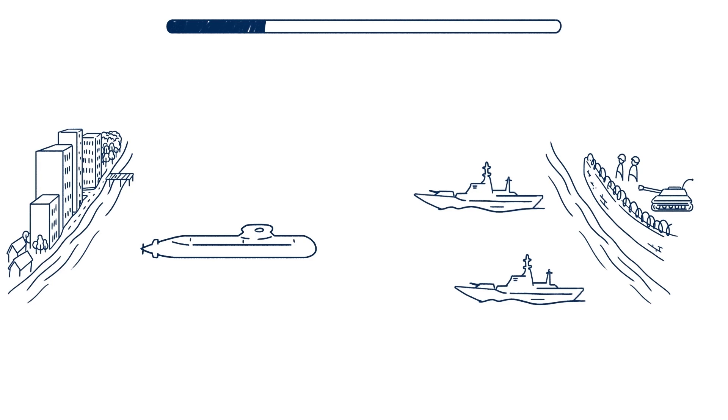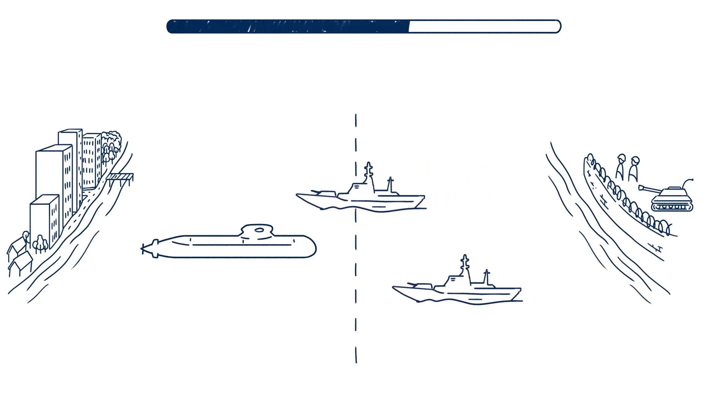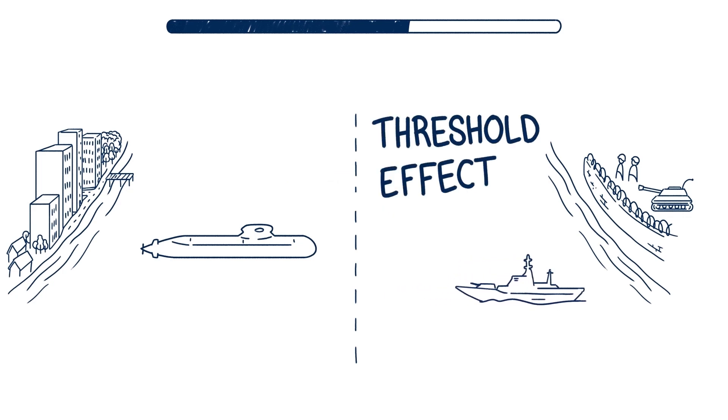By using a submarine fleet, the message is conveyed even in peacetime. A potential enemy must overcome the submarines before reaching the coastline. That is the threshold effect of submarines.